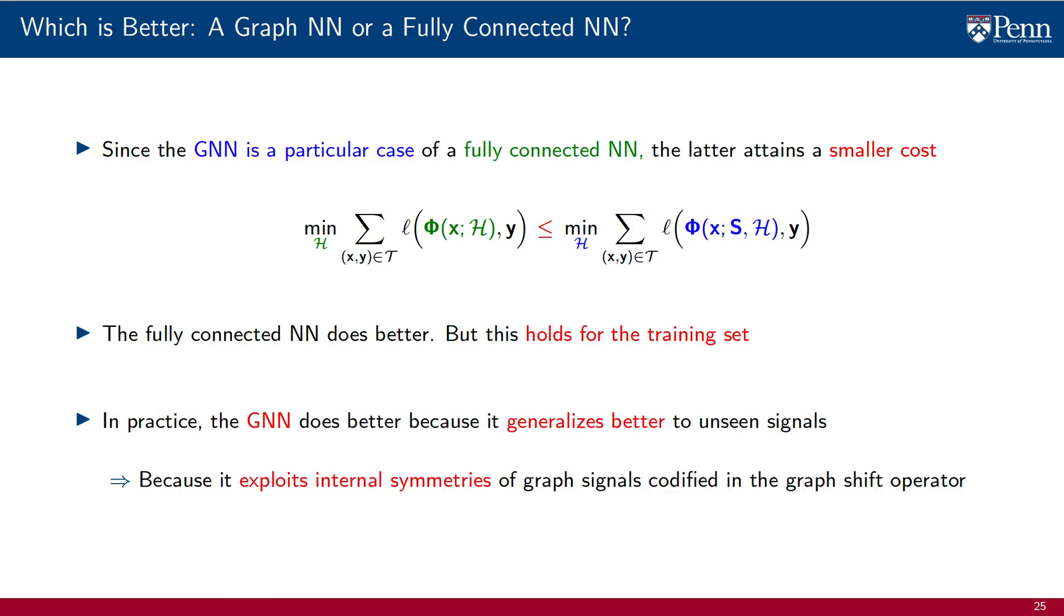And in turn, this happens because the GNN successfully exploits internal symmetries of graph signals that are codified by the graph shift operator. This is a somewhat obscure statement, but it is also the reason why we are studying GNNs instead of just relying on fully connected neural networks.